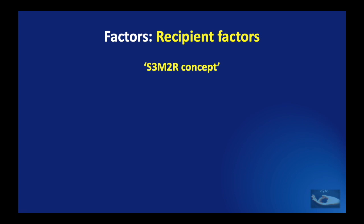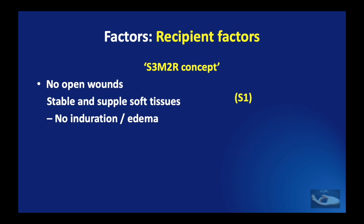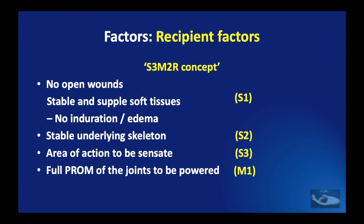The absence of open wounds and stable, supple soft tissues with no induration or edema corresponds to S1. The necessity for a stable underlying skeleton corresponds to S2. The requirement for sensation corresponds to S3, and the need for soft, supple, and full passive range of movements of the joints corresponds to the M1 category.